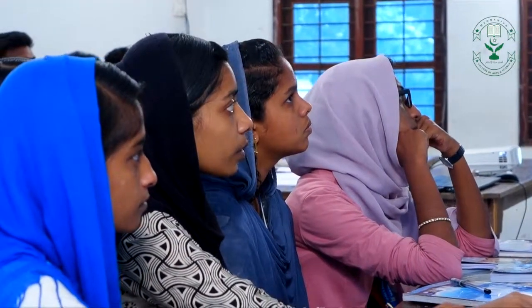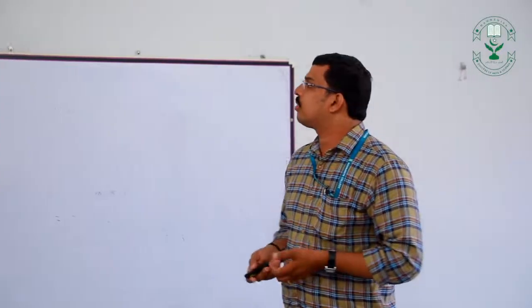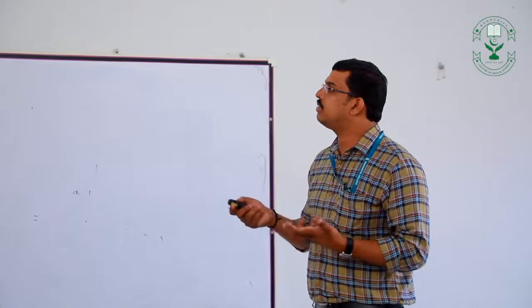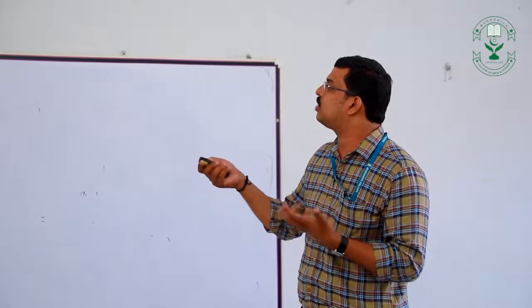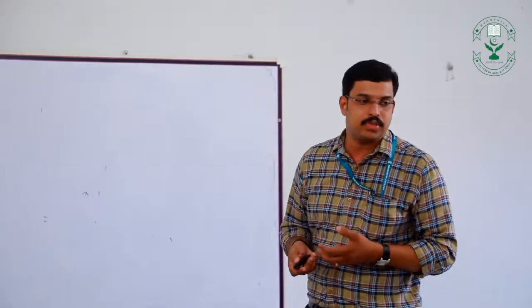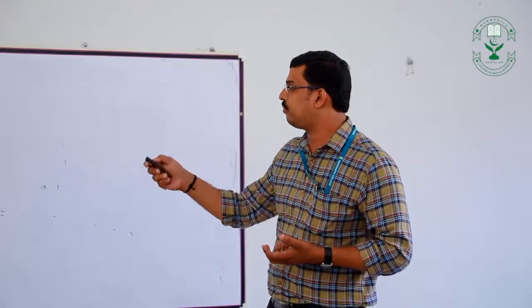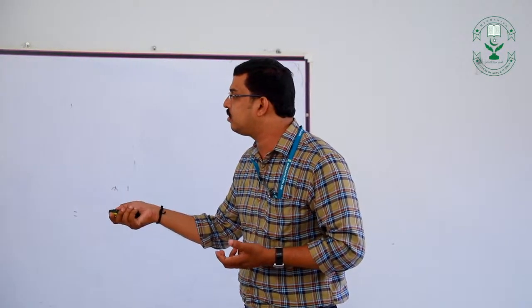Half of the major axis is called the semi-major axis. Kepler's Second Law states that the line joining a planet to the sun sweeps out equal areas in equal intervals of time. This is the position of the planet, and the sun is at one of its foci.